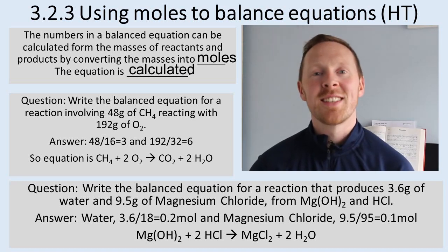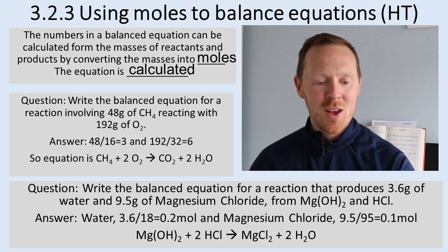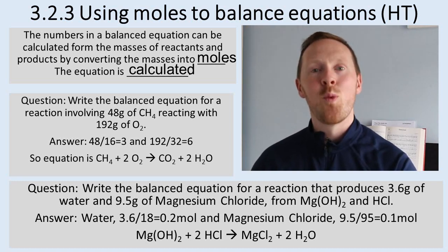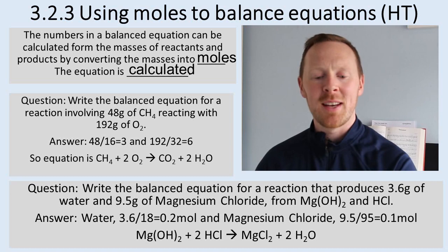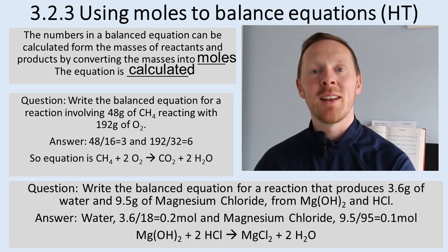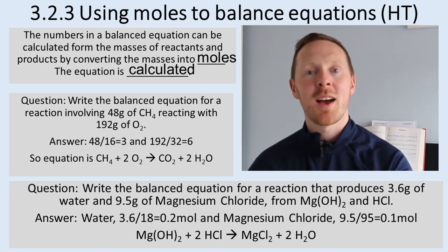Want to look at this second example. Let me read it out for you. Write the balanced symbol equation when 3.6 grams of water and 9.5 grams of magnesium chloride are formed from magnesium hydroxide reacting with hydrochloric acid.